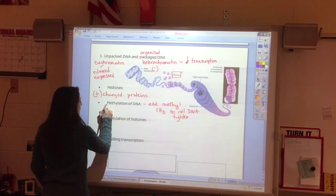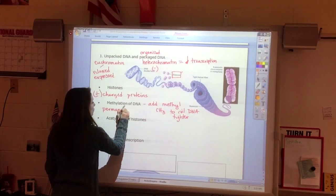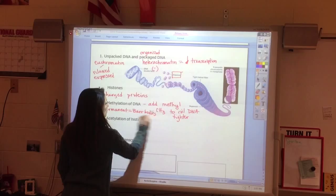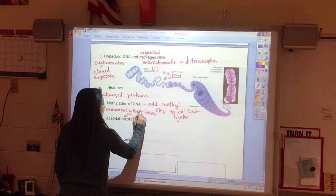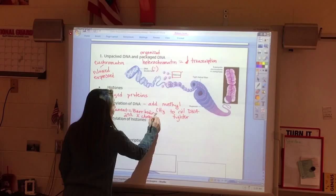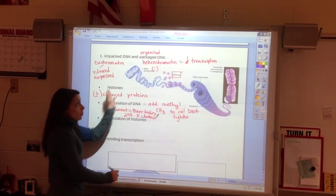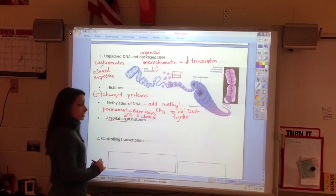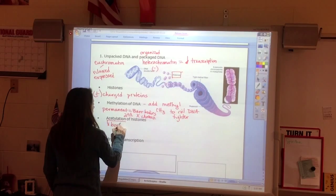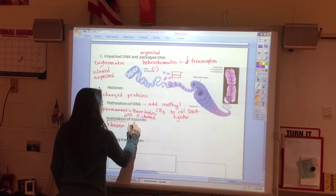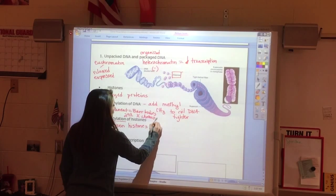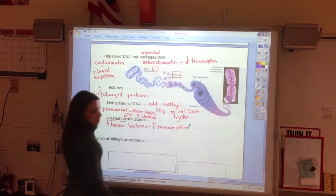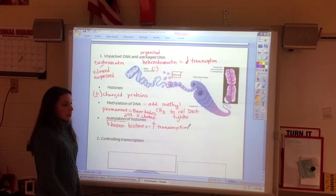And sometimes this is even permanent. So if you remember bar bodies, what happens to the extra X chromosome in women, that actually gets permanently inactivated. If I'm packaged and I want to loosen it up, I acetylate my histones. And this is going to loosen the histones, and so I'm going to have increased transcription. So the first place that I can regulate protein synthesis or transcription is at the DNA level.